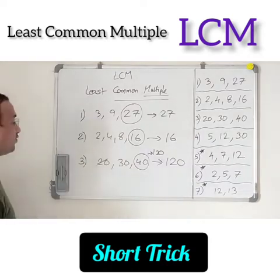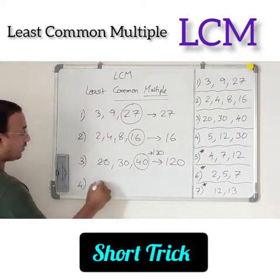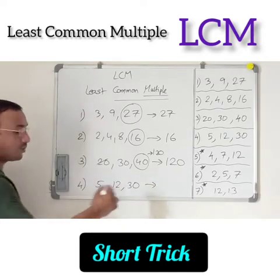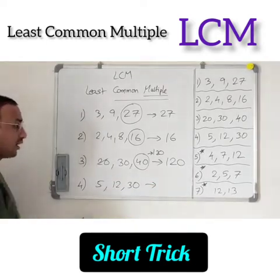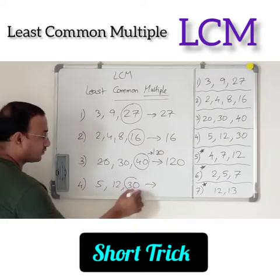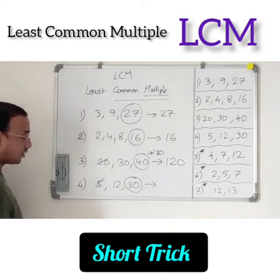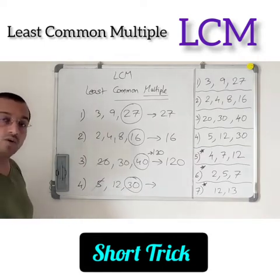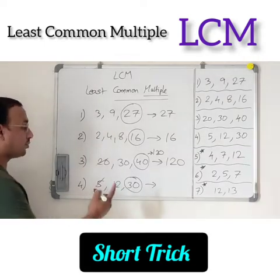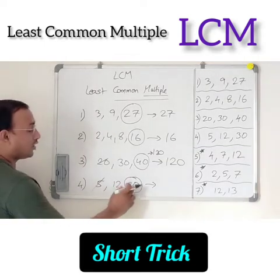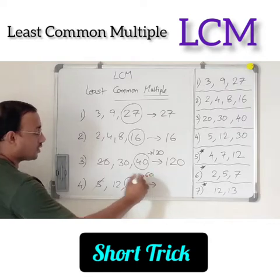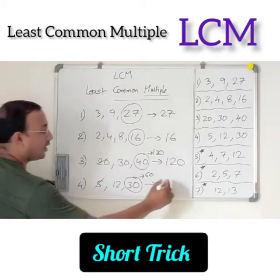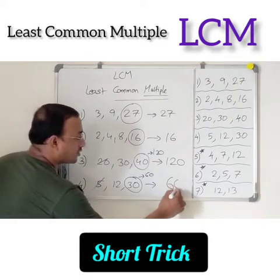Let us go with the fourth one: 5, 12, 30. What is the biggest number? 30. Is it divisible by 5? Yes. Is it divisible by 12? No. Then take the multiples. 30×2 = 60. Is 60 divisible by 12? Yes. Therefore, the LCM is 60.